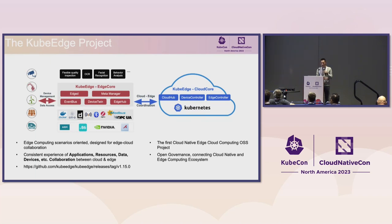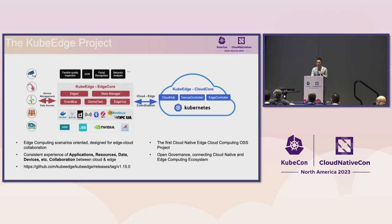The KubeEdge project goal is to solve edge computing problems with a cloud-native approach. We are oriented by cloud computing scenarios, including the far edge, near edge, IoT devices, and all the way to CDN and large cloud edge. This covers consistent applications, resource management, data, and device management.